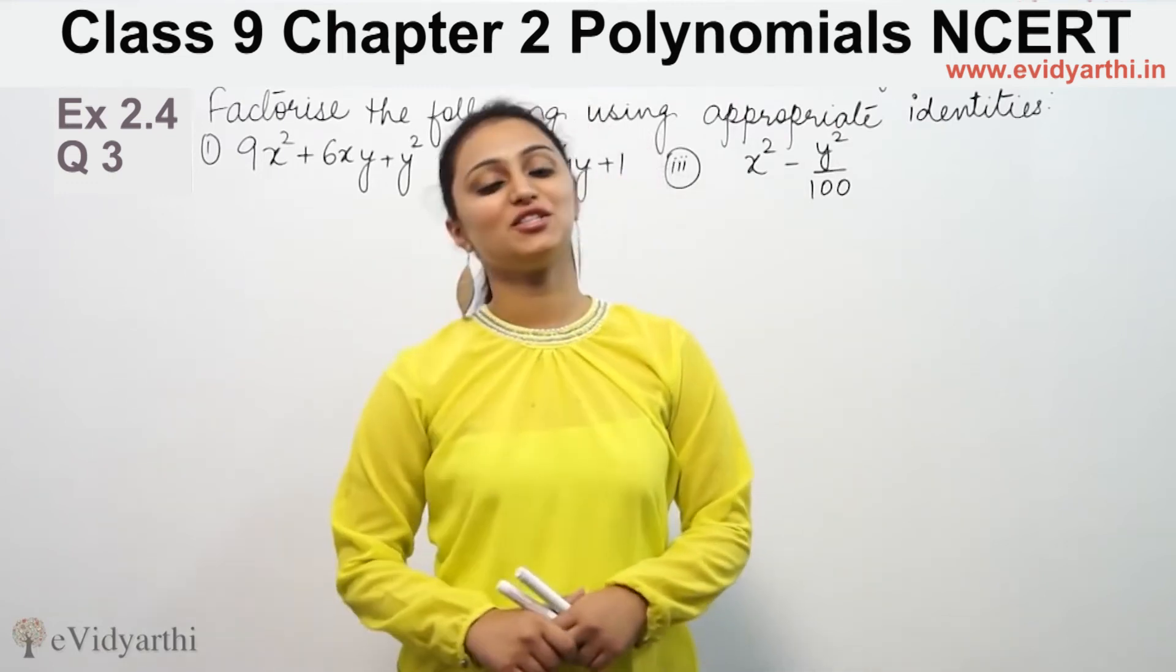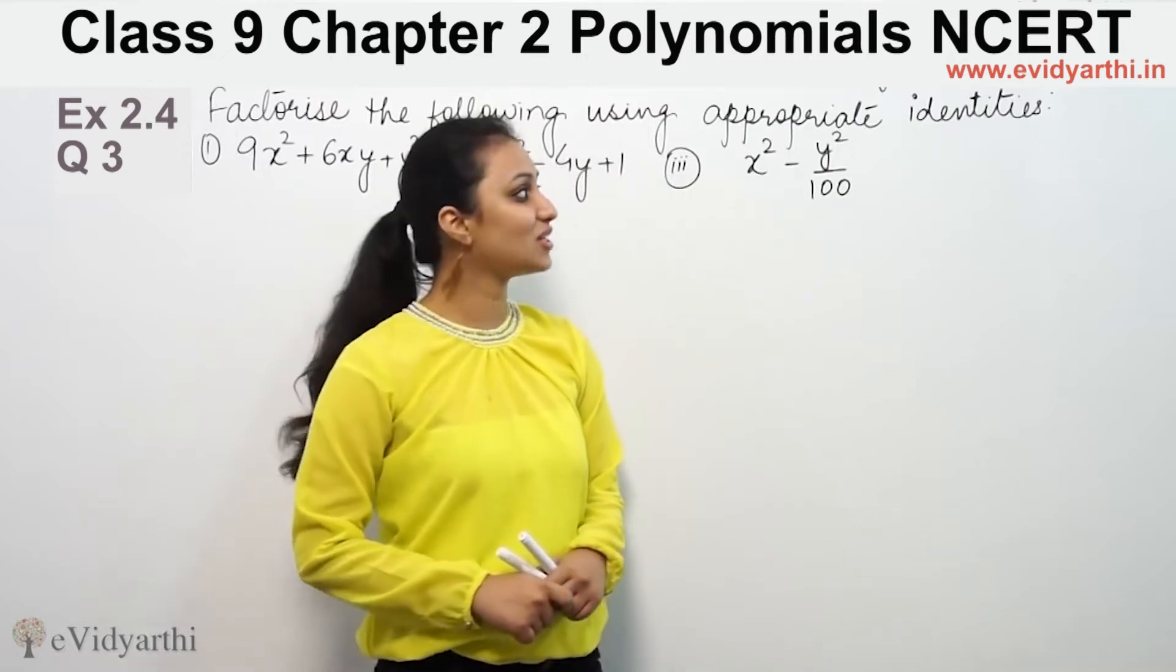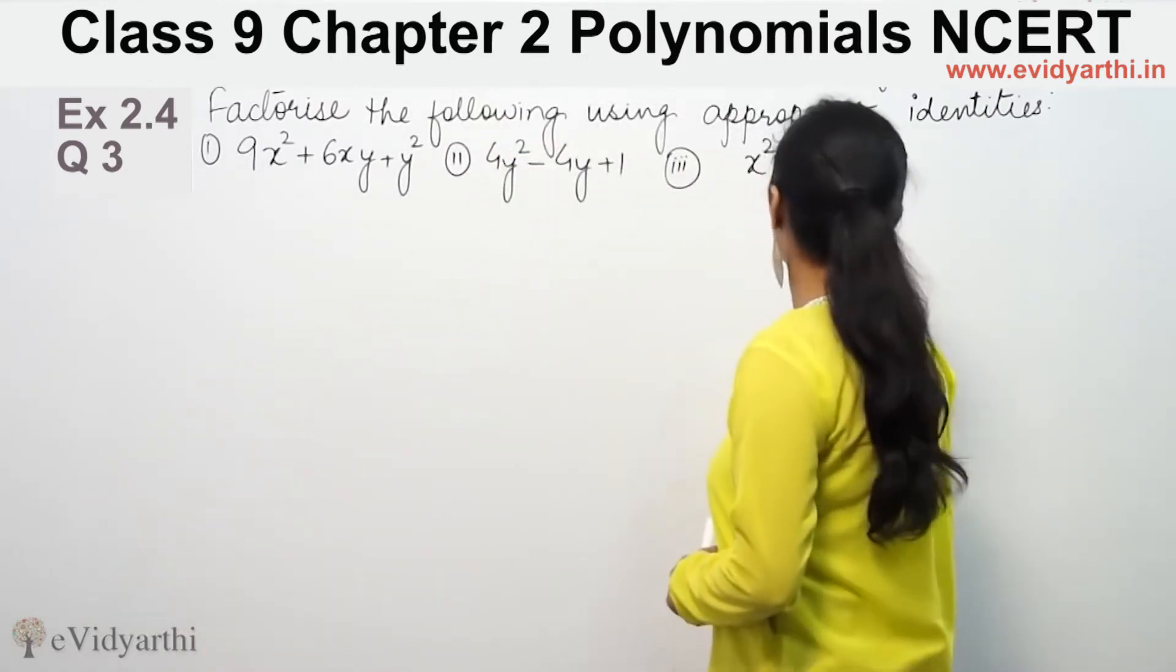Hi, this is Khushku with another question on Polynomials. This is question number 3 from exercise 2.5, page number 48 from NCERT. It says factorize the following using appropriate identities.